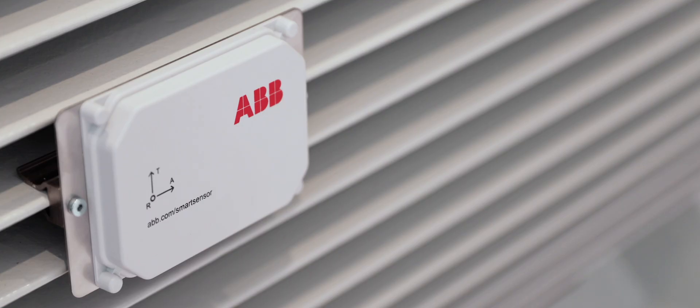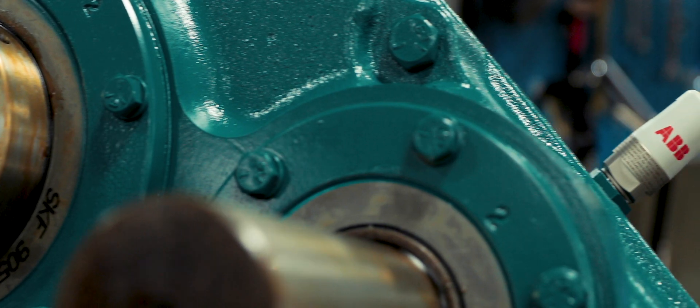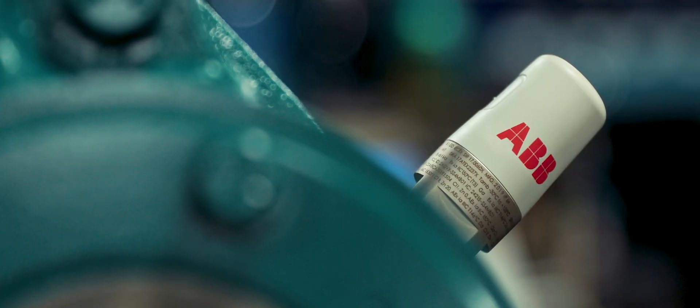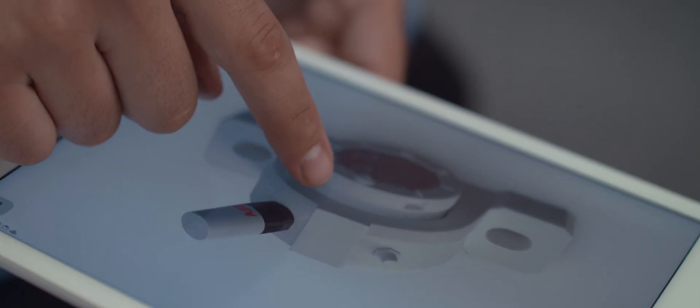The ABB Ability Smart Sensor, part of the ABB Ability Digital Powertrain, is an easy-to-use wireless sensor which monitors the health of critical components, allowing users to reduce downtime, improve reliability and operate safely.